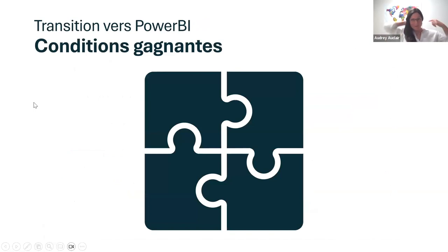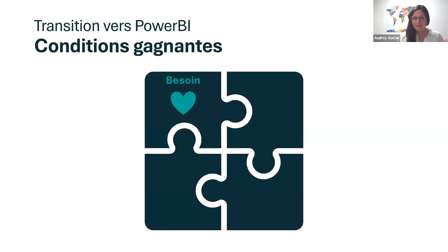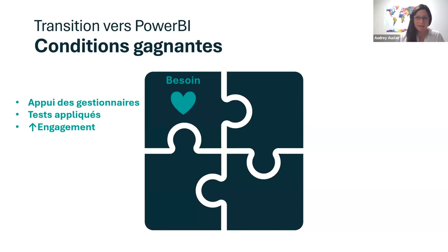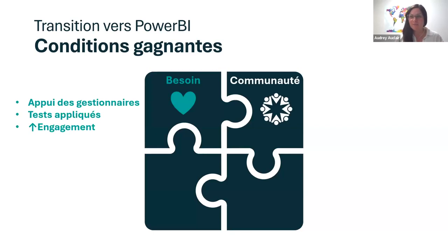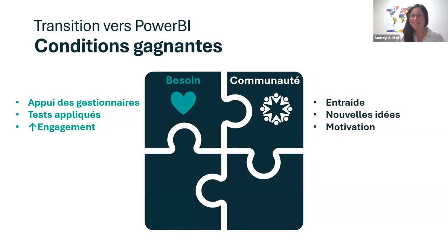The winning conditions for Power BI: if you want to operate a transition in your CEGEP or in your service, what would those be? First, start from a need — because it ensures you have the support of your managers, increases engagement of people who will help find solutions and try different things to reach the desired objective. There's also the aspect of community. Another shout-out to Repstat and François. It really allows us to help each other, share new ideas, whiteboard together, stay motivated, ask questions, and better use the tool to meet our needs.